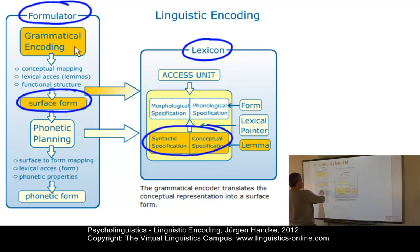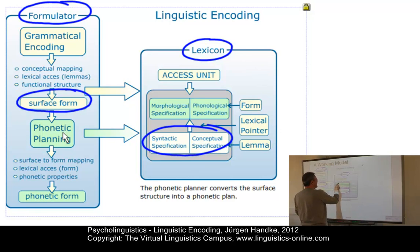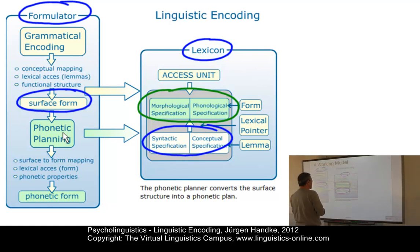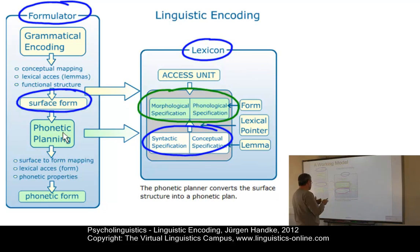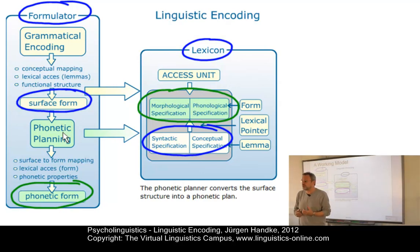The second level is the level of phonetic planning. Here, we translate the surface form by retrieving the formal aspects from the mental lexicon about each entry in the input string, translating it into a phonological and then eventually a phonetic structure, which serves as the output of the entire formulator and can be forwarded to the articulators, which will be set in motion to produce an audible sentence.